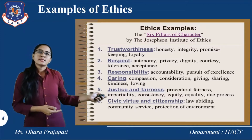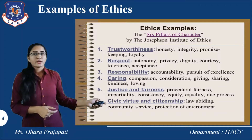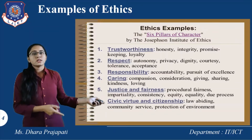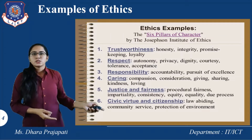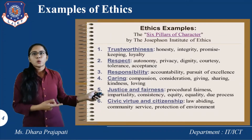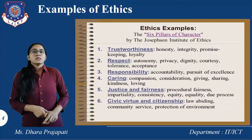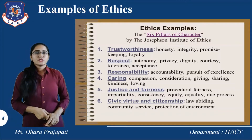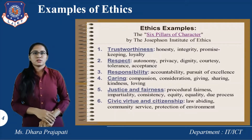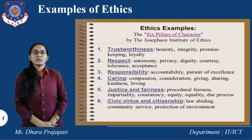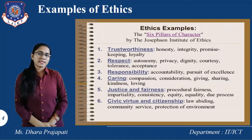The fifth example is Justice and Fairness, which is useful for both business ethics and personal ethics. Its values include procedural fairness, impartiality, consistency, equity, equality, and due process — meaning legal requirements. The sixth example is Civic Virtues and Citizenship, which includes law-binding (following rules and regulations), community services, and protection of the environment.